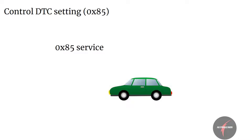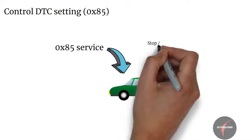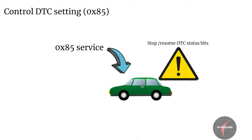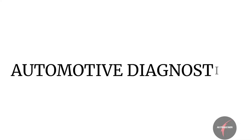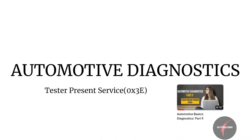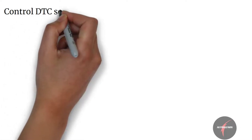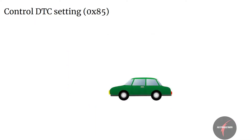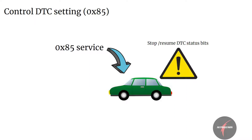Control DTC Setting service shall be used by a client to stop or resume the updating of DTC status bits in an individual or group of servers. In the last video we had a look into details of Tester Present service 3E. Let's have a look into the next diagnostic service, that's Control DTC Setting service 85. Before we dive in, let's first understand the purpose of this service.